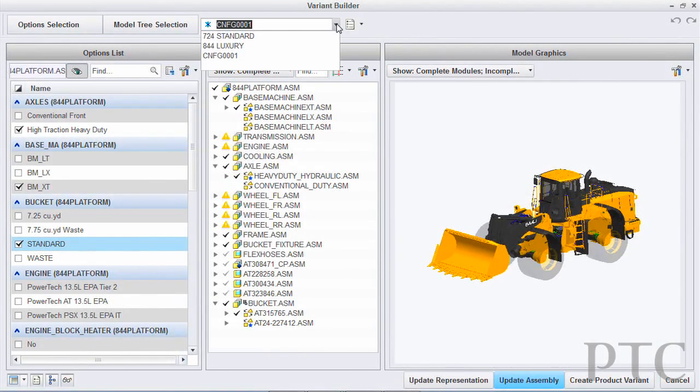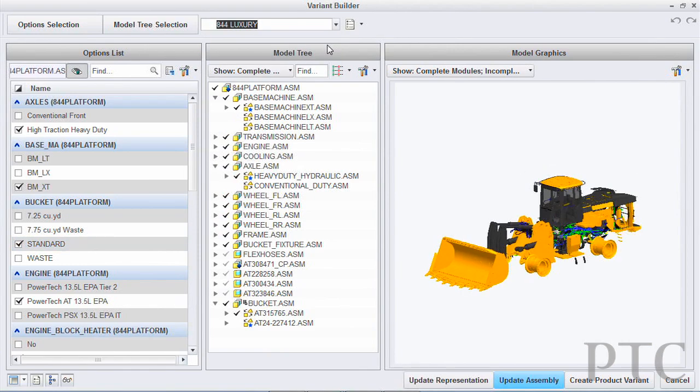CREO Options Modeler is a dedicated app for creating and validating modular product assemblies no matter the complexity. It helps customers deliver personalized products that meet customer needs, whether it's market-based or regional-based.